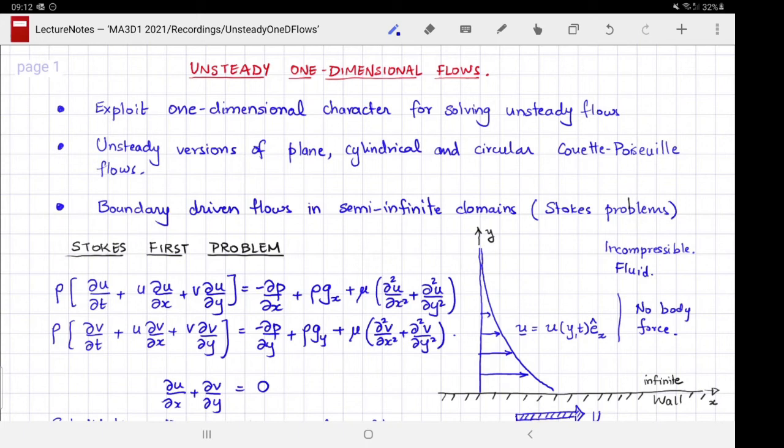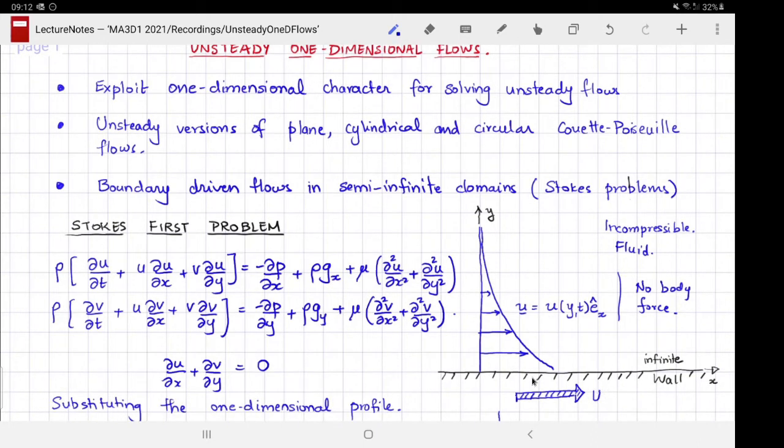The setup of the problem is as follows: we have a semi-infinite layer of fluid next to an infinite wall. This layer of fluid is initially static—it is completely at rest. But at time t equals zero, the wall starts to move to the right along the positive x direction with some speed capital U. That motion of the wall drags some of the fluid with it, and it is the flow setup in response to that that we want to solve.